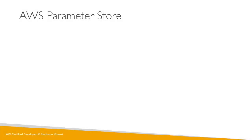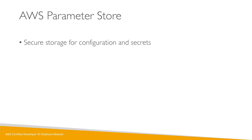Let's talk about the AWS Parameter Store. To me, this is one of the most revolutionary services — it's underutilized by people and you should know about it because the exam is starting to ask questions. It's a way to securely store your configuration and your secrets. As the name indicates, it's a parameter store, and you have the option to use seamless encryption using KMS to encrypt any configuration you put in the store.